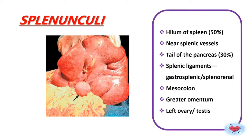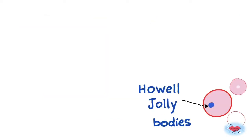The most common site for accessory spleens is the hilum of the spleen, followed by the tail of pancreas. Other sites include near splenic vessels, splenic ligaments, mesocolon, and greater omentum. After splenectomy, these accessory spleens undergo hyperplasia and may lead to other disorders.